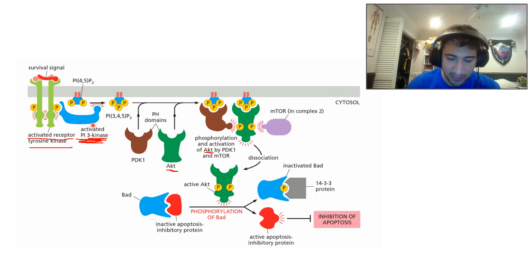Receptor tyrosine kinase activates PI3K. PI3K phosphorylates this. And this will bring AKT over here. AKT gets phosphorylated. And then it leaves.